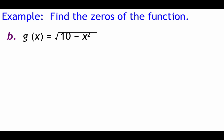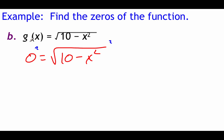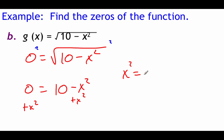Next example — you can pause and try this one yourself. We've got g(x) = √(10 - x²). Finding the zero: set 0 = √(10 - x²). To get x out from under the square root, we square both sides: 0 = 10 - x². Adding x² over gives x² = 10. Taking the square root of both sides: x = ±√10. You can graph that one to check your answers.